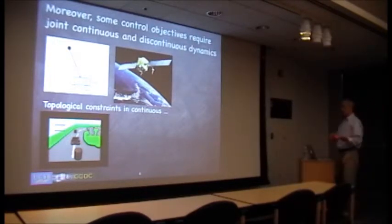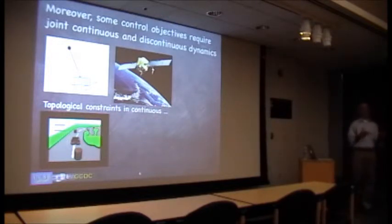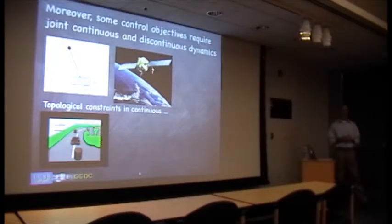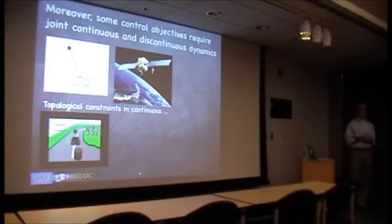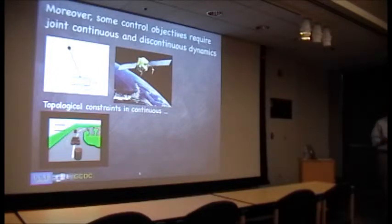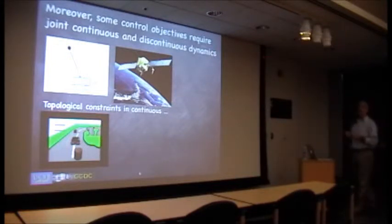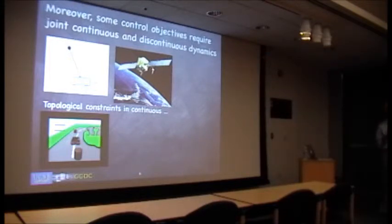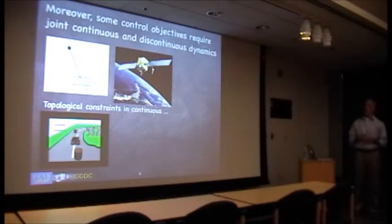Not only do we encounter dynamical systems with hybrid aspects — interaction between continuous and instantaneous change — but in control, you sometimes run into problems where you're trying to control a classical continuous system, but the objectives you're trying to achieve necessitate a hybrid control algorithm. There are control problems you cannot solve with classical feedback that you can solve with hybrid feedback, and these are usually associated with some type of topological constraint that makes solving the problem impossible with classical feedback.